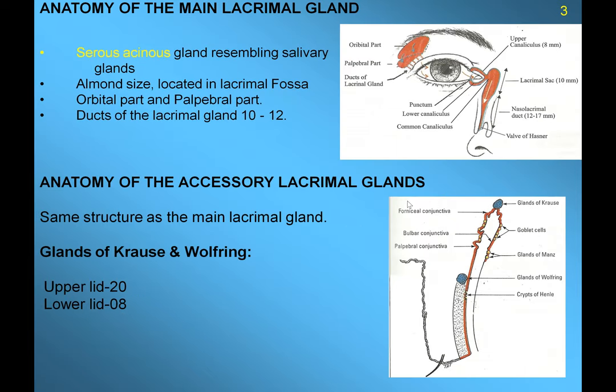The main lacrimal gland is an almond-shaped gland located in the anterior and lateral portion of the orbit, superior lateral to the eyeball. It is a sero-acinar gland that pours its secretion through 10 to 12 ducts into the superior conjunctival fornix. This gland is mainly activated under reflex conditions and for flushing of the eye when a lot of tears are required.